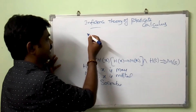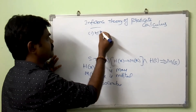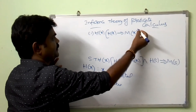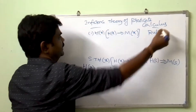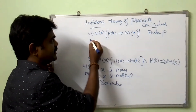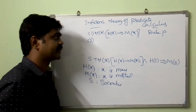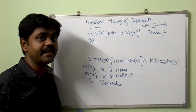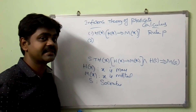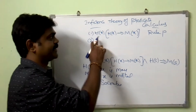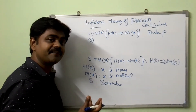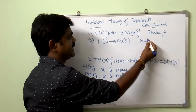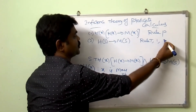So first, let me take for all x, H(x) implies M(x). This is premise 1, which is already given. So here we have universal specification: for all x, A(x), we can conclude A(S). So what is my conclusion? S — S is nothing but Socrates. So in the place of for all x, H(x) implies M(x), I can write H(S) implies M(S). This is Rule T on premise 1 with universal specification.